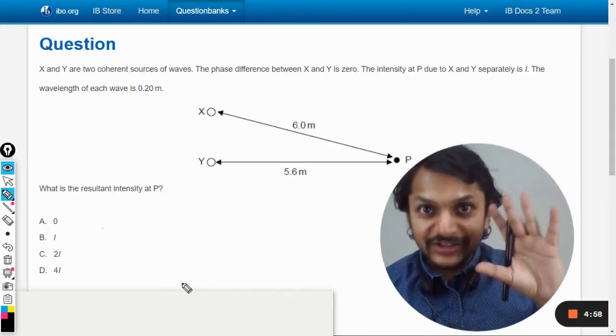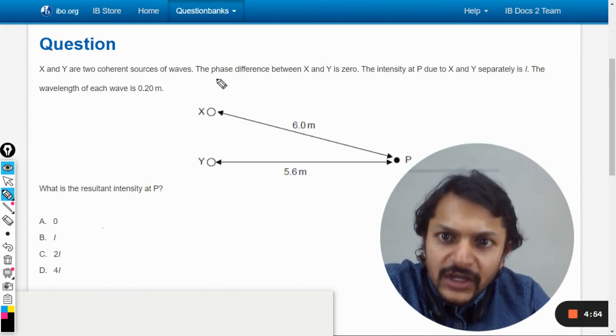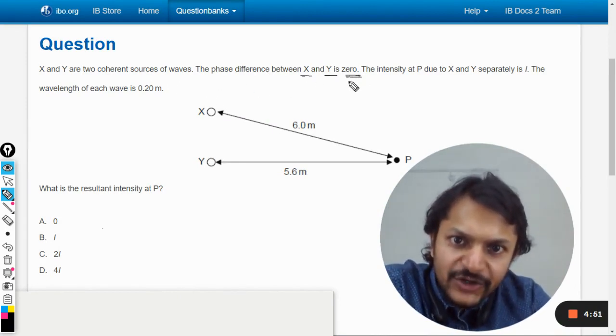Okay dear students, let us see what is there in this question. X and Y are two coherent sources of waves. The phase difference between X and Y is 0.